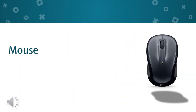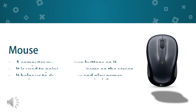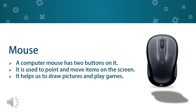Mouse. A computer mouse looks like a real mouse. It has two buttons and a scroll wheel. A mouse is used for clicking and selecting files and pictures on the screen. It also helps us to draw pictures and play games.